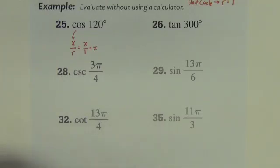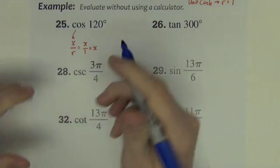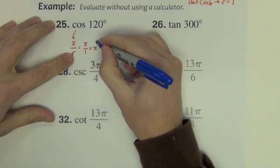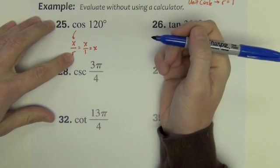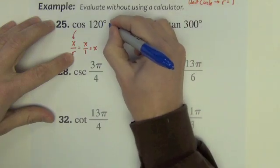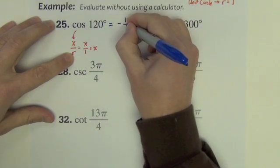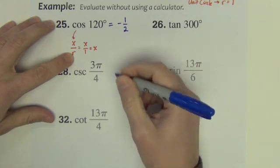In other words, the cosine of 120 degrees is just the x value of the point at 120 degrees. So look at your circle. Find 120 degrees. Find the x value, and you'll find that it's negative 1 half.